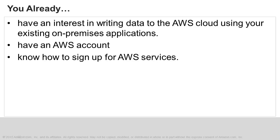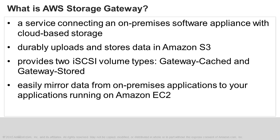To get the most out of this video, you should have an interest in writing your on-premises data to the AWS Cloud. You should already have an AWS account and know how to sign up for AWS services. The AWS Storage Gateway is a service connecting an on-premises software appliance with cloud-based storage to provide seamless and secure integration between an organization's on-premises IT environment and AWS's storage infrastructure. The AWS Storage Gateway supports two types of storage volumes, which you mount to your on-premises servers as iSCSI devices.